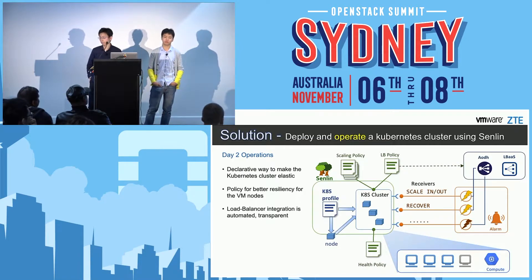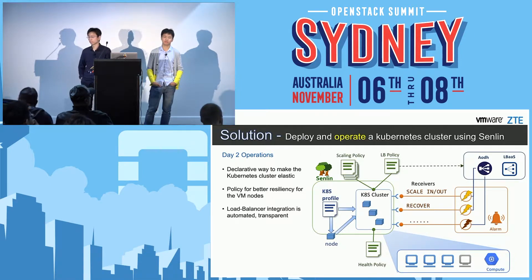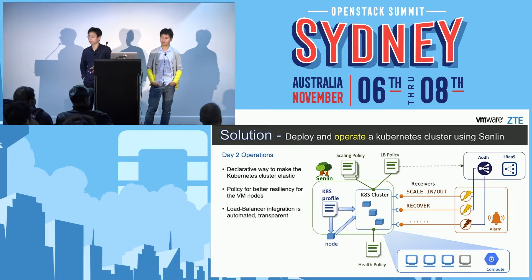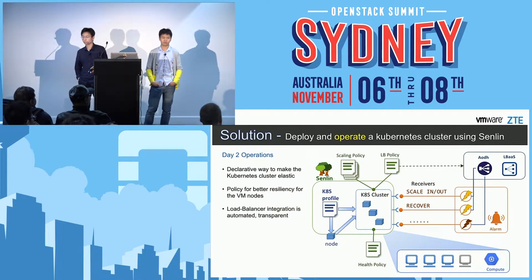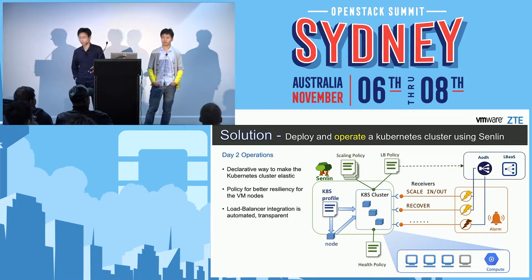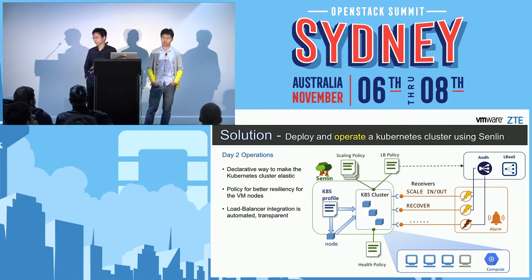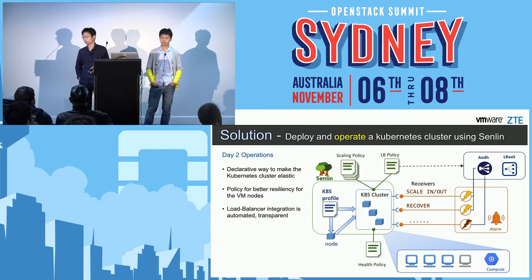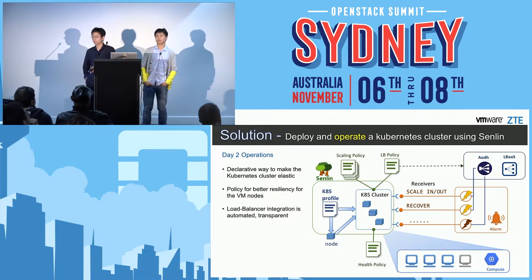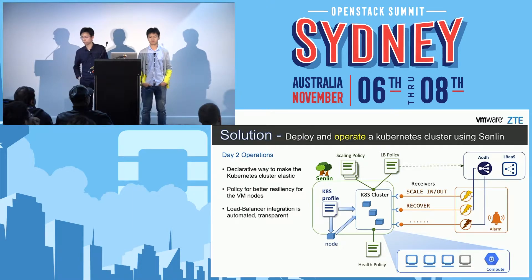This covers the day-two operations provided by Senlin. Senlin has integrated with LBaaS, AODH, and many other policies such as a scaling policy, load balance policy, and health policy. We can receive messages from Zaqar or via webhook, and we can do scale-out, or recovery, or rebalance shares, and many other actions.